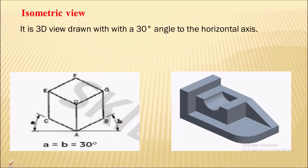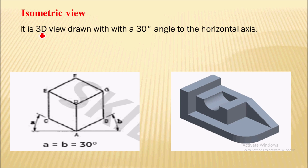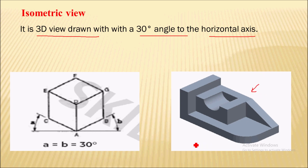The first type of view is the isometric view. It is a three-dimensional view that is drawn with a 30 degree angle to the horizontal axis. Here you can see the isometric view — if I draw a horizontal line, this angle will always be 30 degrees in case of isometric view.